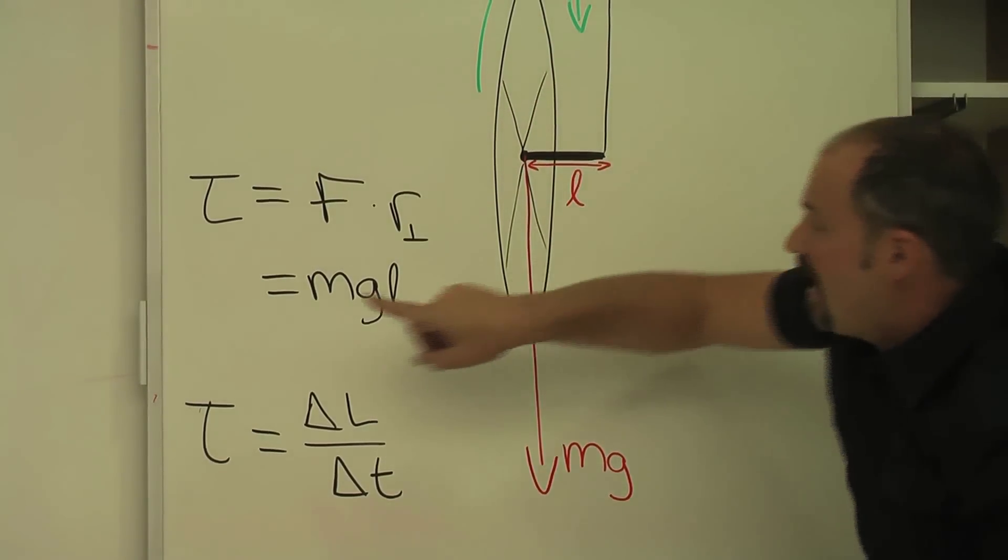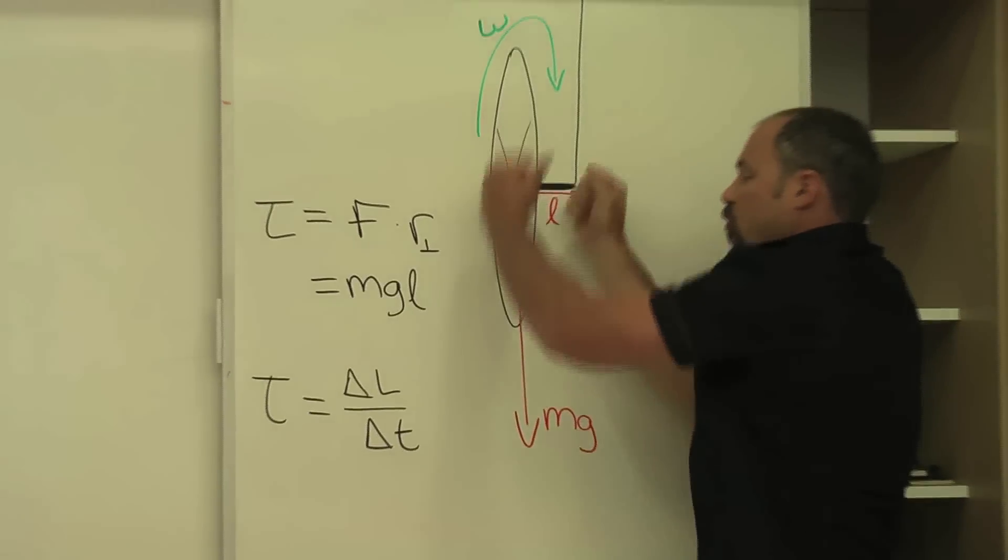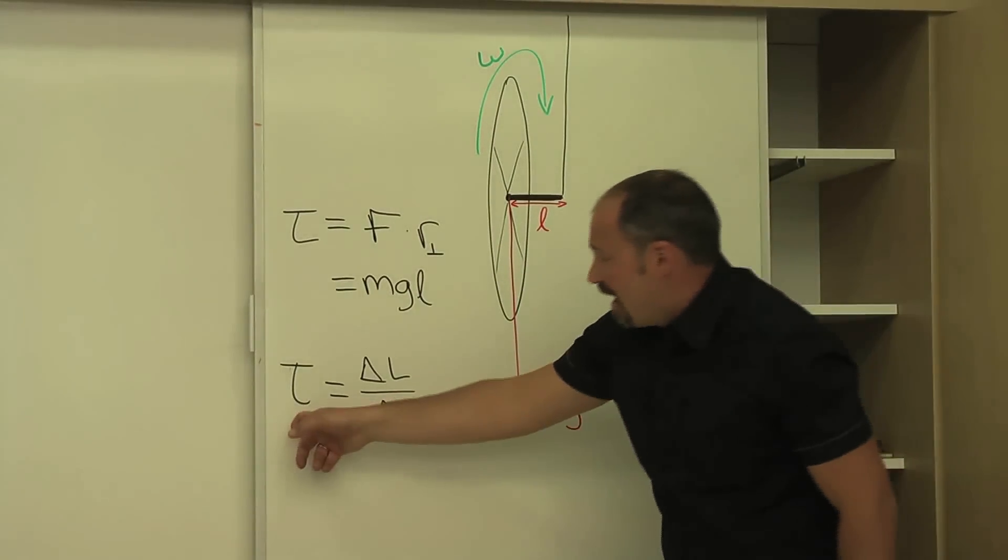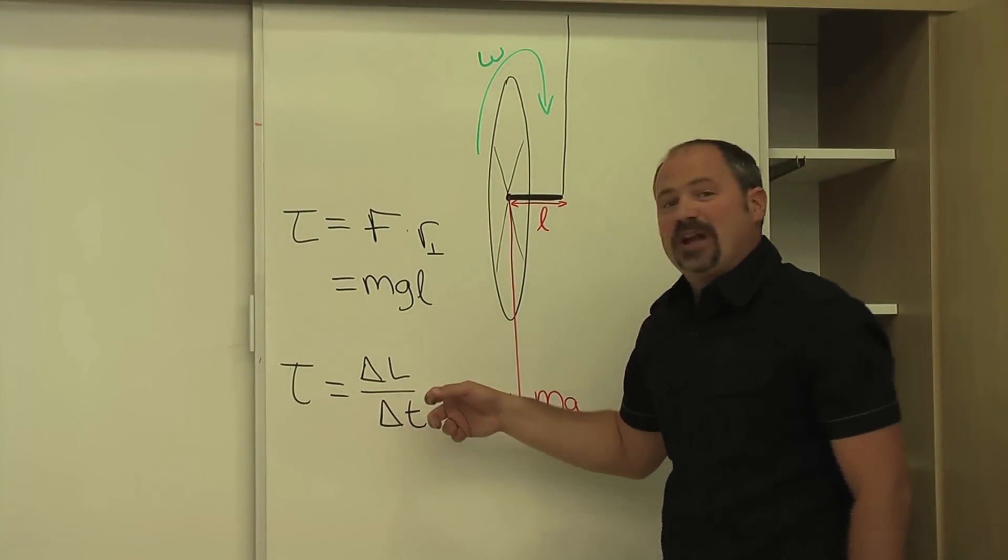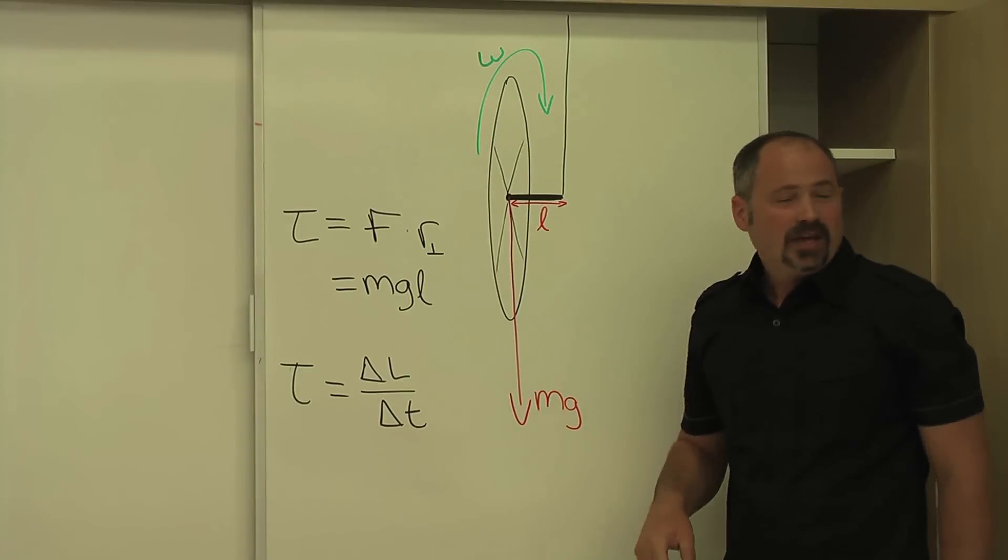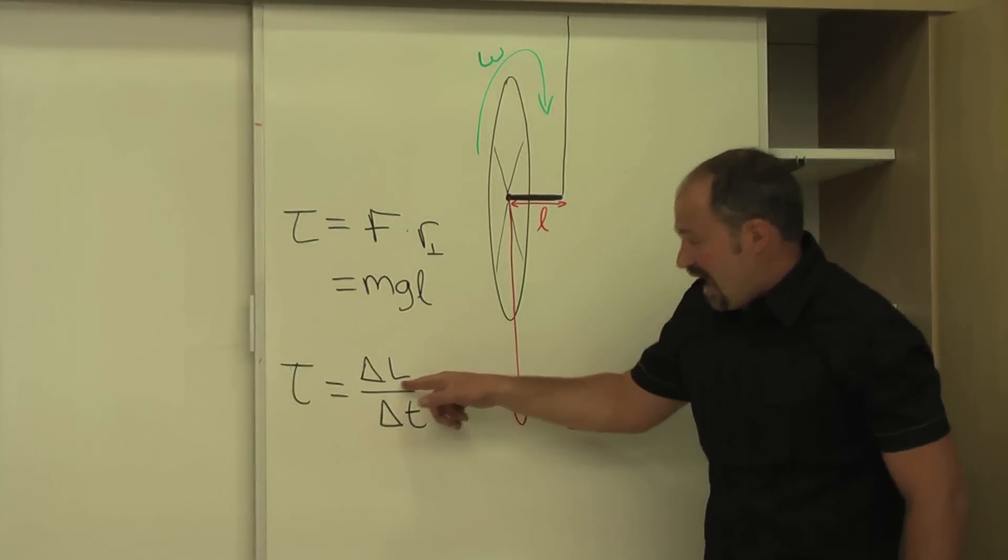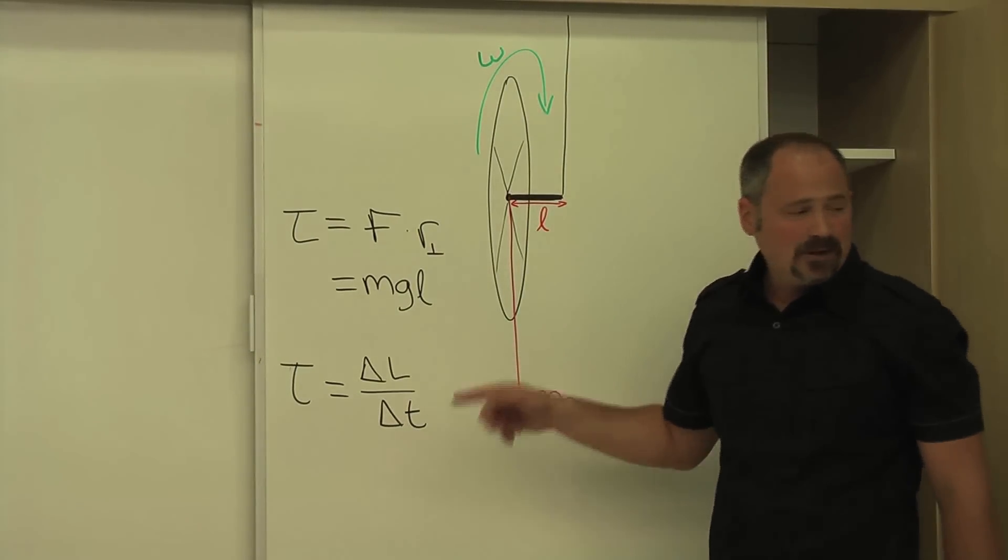And therefore you have torque. So the torque pulls it down. Now you have torque, and therefore you can have a change in momentum. And what's happening here—and I should say angular momentum—what's happening here is that...